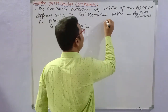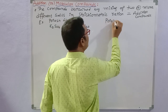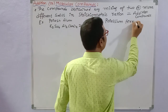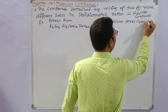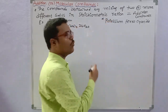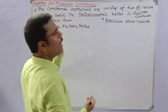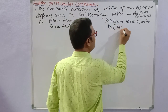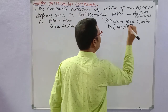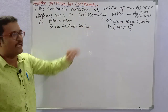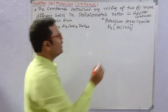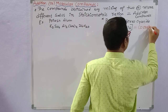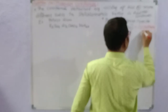The second example is potassium ferrocyanide. This is the topic of interest — it is a coordination compound, a type of addition compound. The formula for potassium ferrocyanide is K₄Fe(CN)₆. Potassium ferrocyanide is a coordination compound.